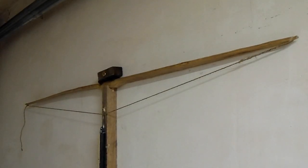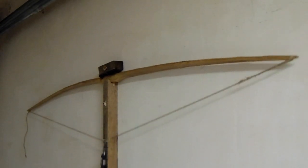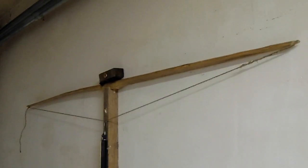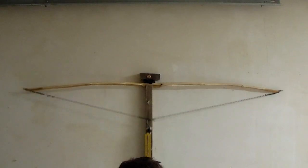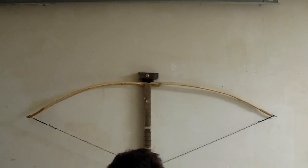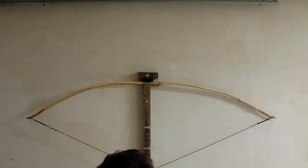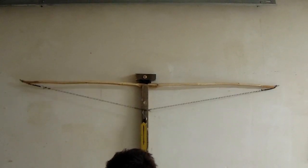Once the bend is looking balanced, we are moving to the long string tillering. We put the weapon on the tillering tree and pull it with the loose bow string. It prevents over stressing the weapon at this point when the bend might be far from being perfect. We proceed the same way as before, step by step, until it's bending fairly nice.